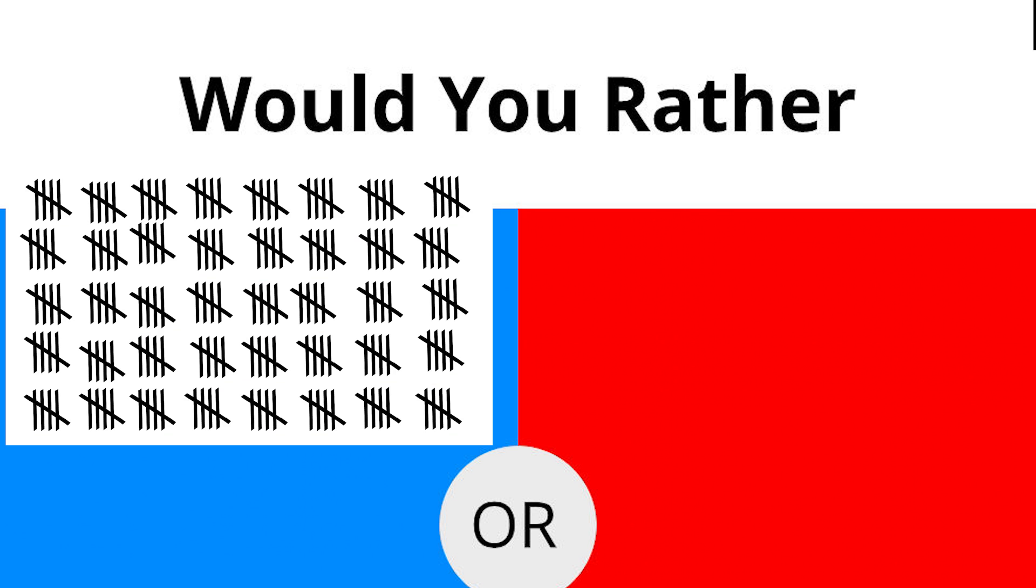And when using this method, you draw a vertical line to represent individual units, with a diagonal line drawn through every fifth line to group them. Why group them? Would you rather count this or this?